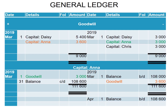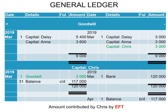Looking at Anna's Capital account, on the debit side of the Goodwill account we have a transaction of $3,600, and that will be on the credit side of Anna's Capital account. The second transaction in the Goodwill account for Anna is on the credit side to close off the Goodwill account; therefore, to complete the double entry, Anna will get a debit transaction of $3,000. Finally, Chris's account: the only entry related to Goodwill for Chris will be on the credit side of the Goodwill account due to the new ratio, and Chris's Capital account will be debited by $3,000. Please note that the $120,000 on the credit side of Chris's Capital account was the amount contributed by Electronic Fund Transfer, or EFT.